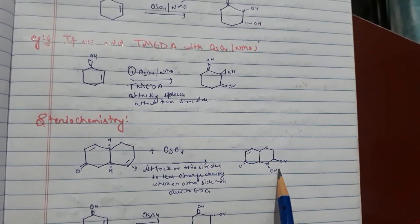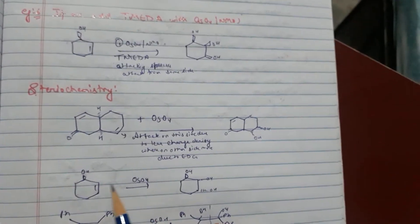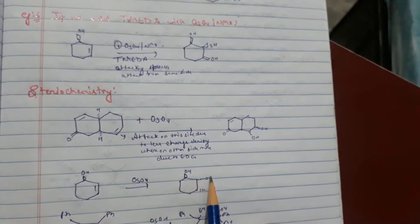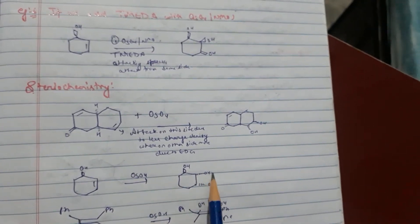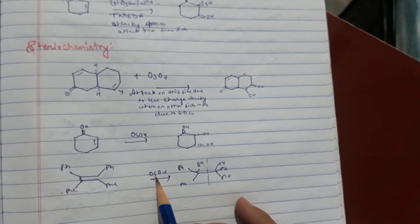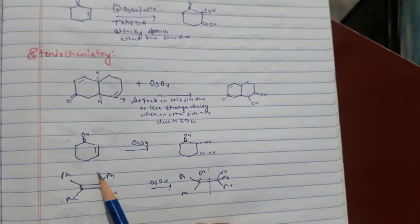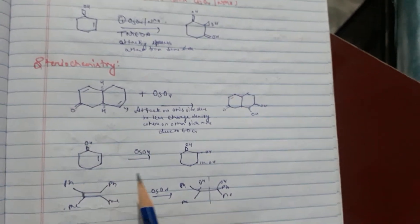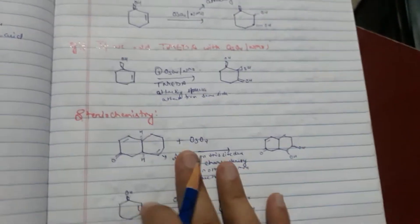So it will make OH, OH here. Now OH, OH same attacking side. So this is the stereochemistry of Osmium tetraoxide.